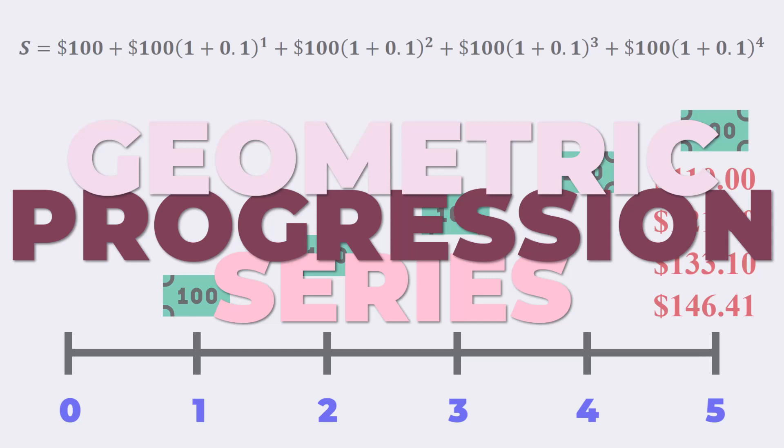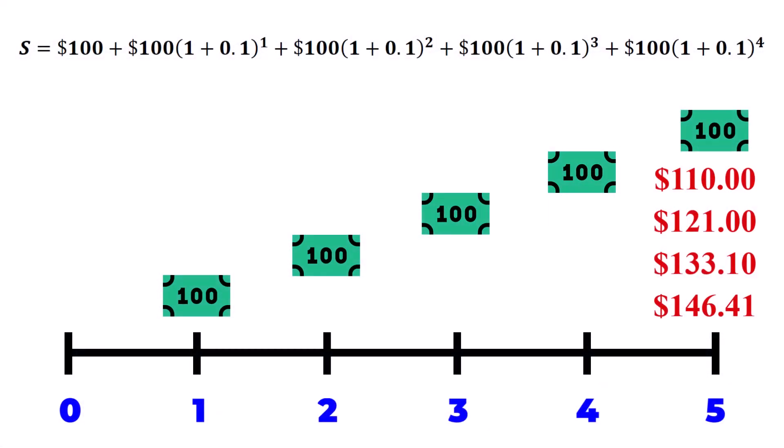All geometric progression series with a finite number of terms, such as this one, their sum can be calculated using this formula. S equals a times r to the power of n take away 1, all divided by r subtract 1. Where a is the initial value, r is the common ratio, and n is the total number of terms. We will explore the derivation of this formula in a separate video.